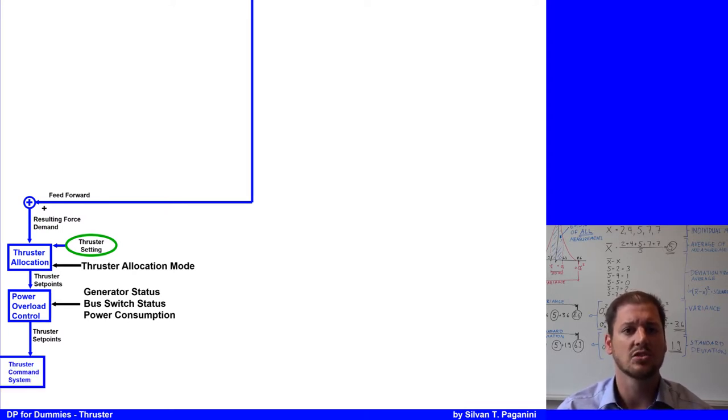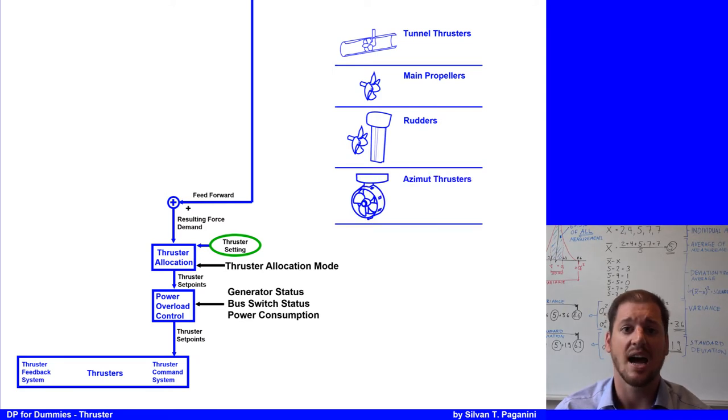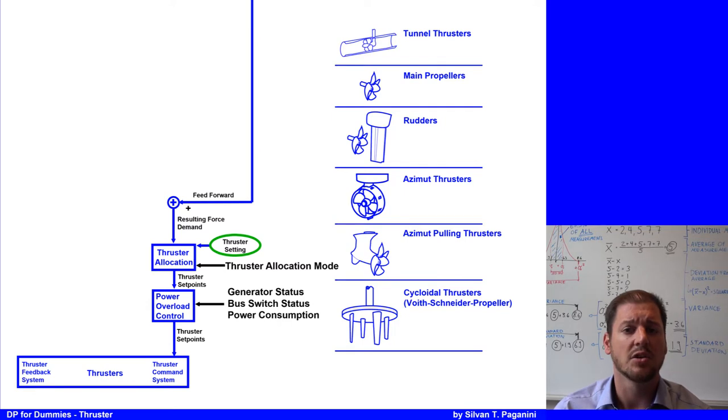After passing the set point through the power overload control, they reach a thruster, where the thruster finally physically thrusts against the external force. There are lots of different types of thrusters, like tunnel thrusters, main propellers, rudders, azimuth thrusters, azimuth pulling thrusters, cycloidal thrusters like a Voith-Schneider propeller, or water jet thrusters like a Chilljet, etc.